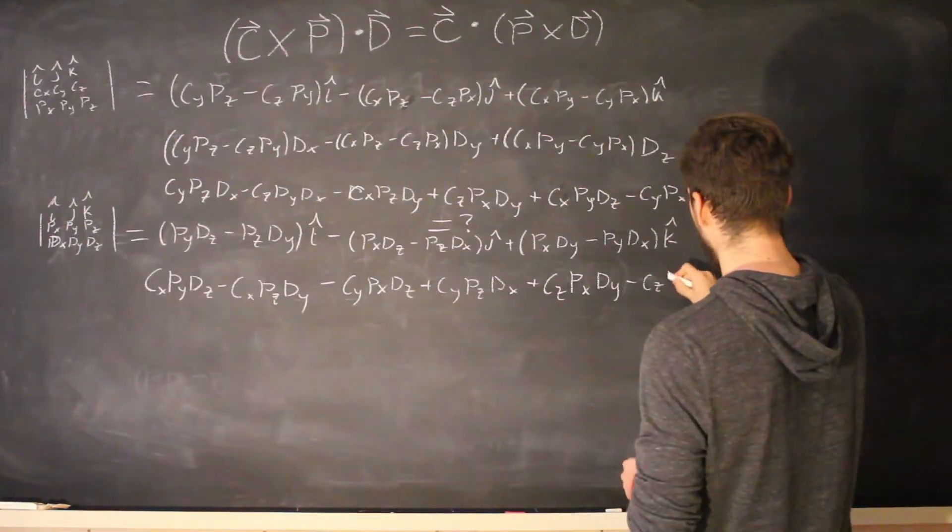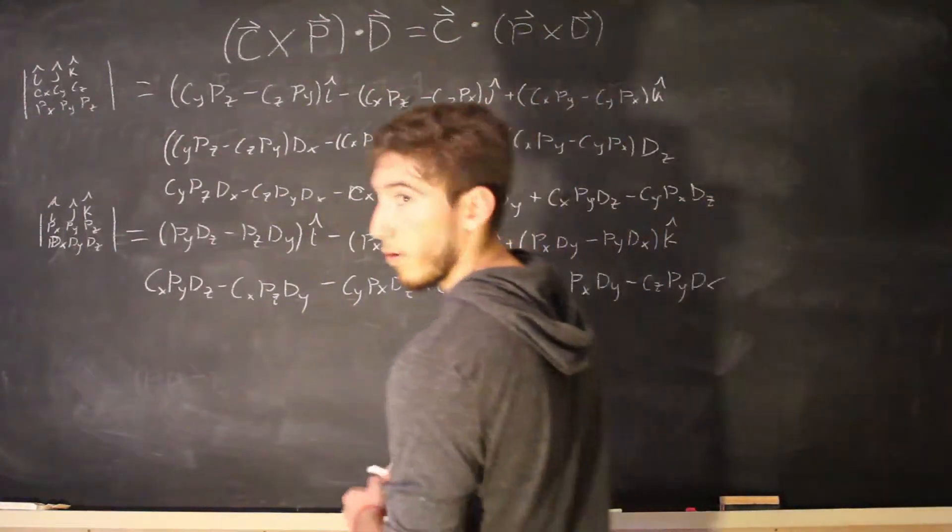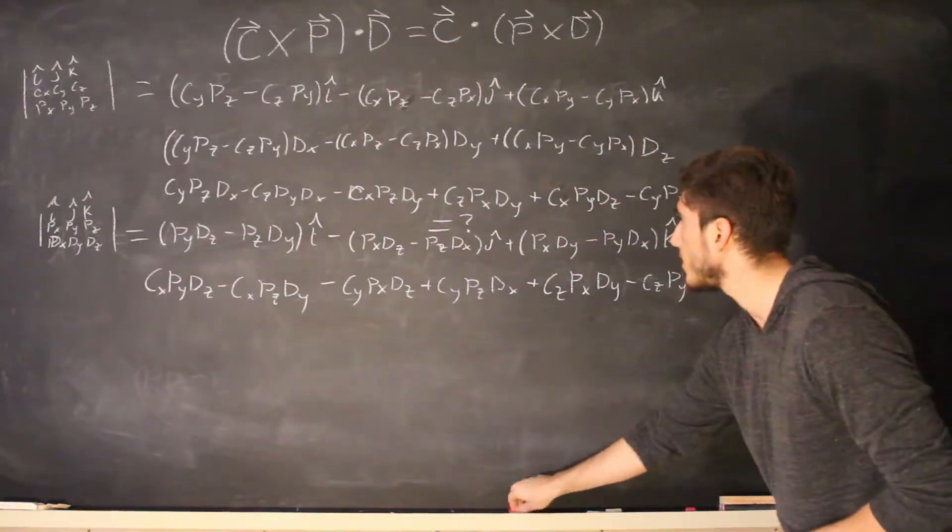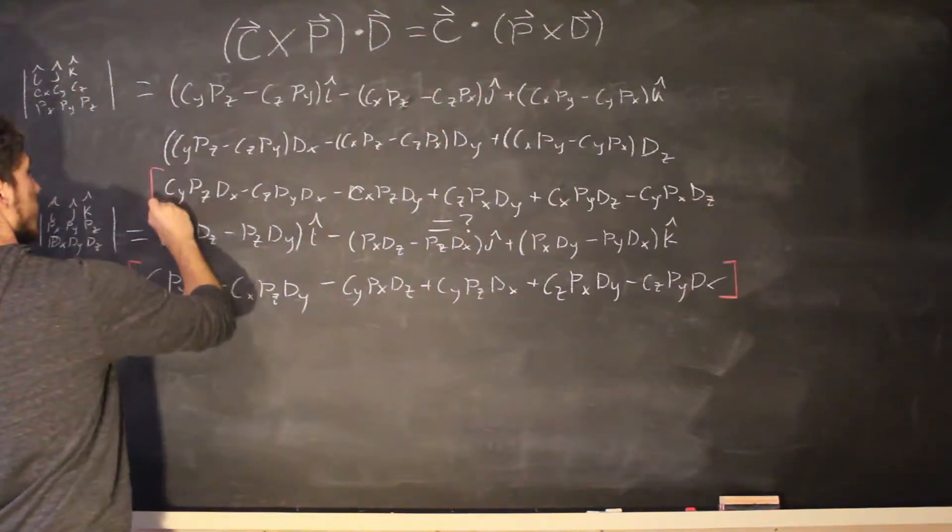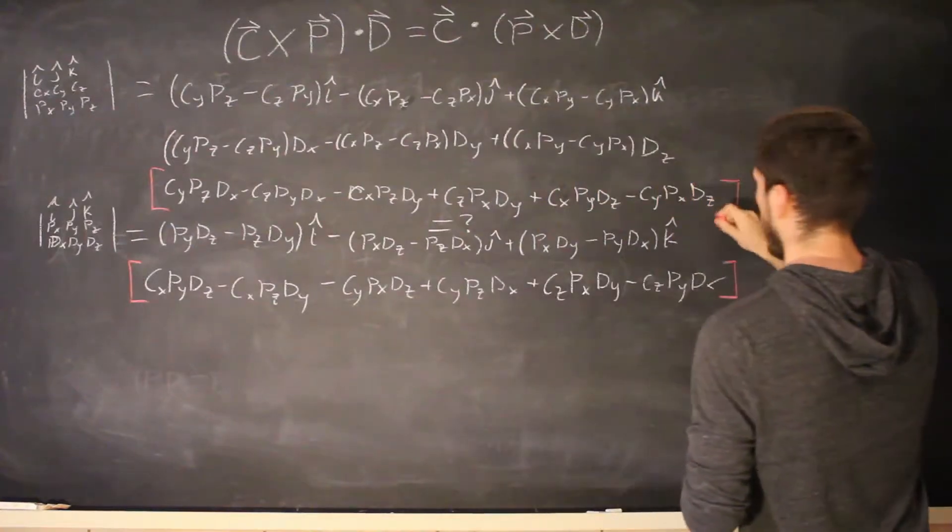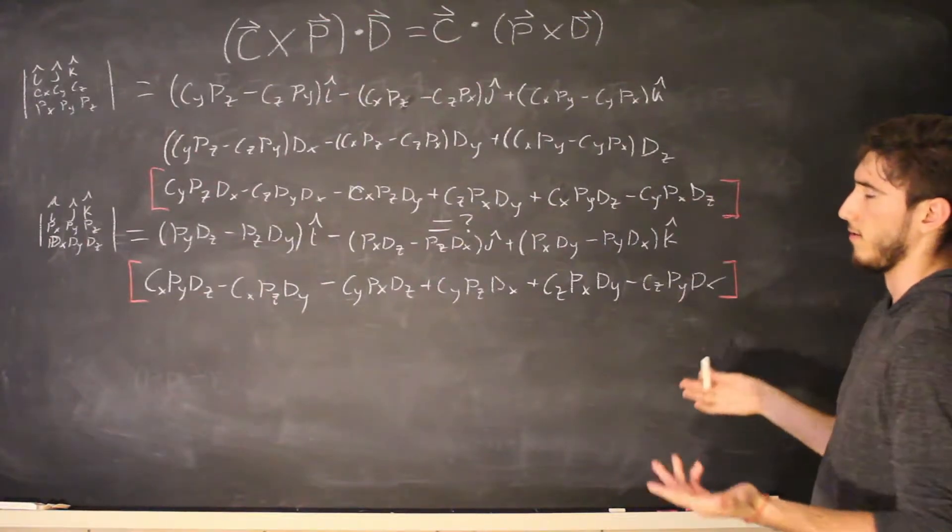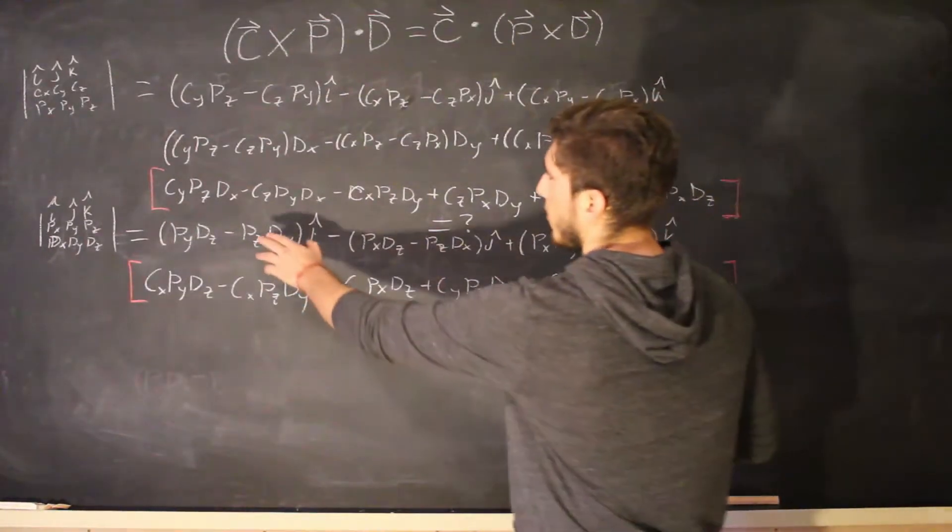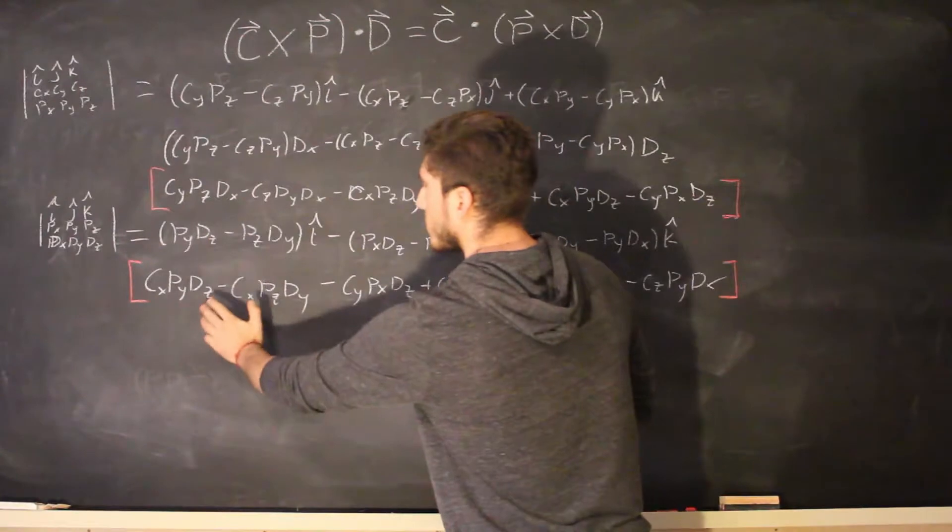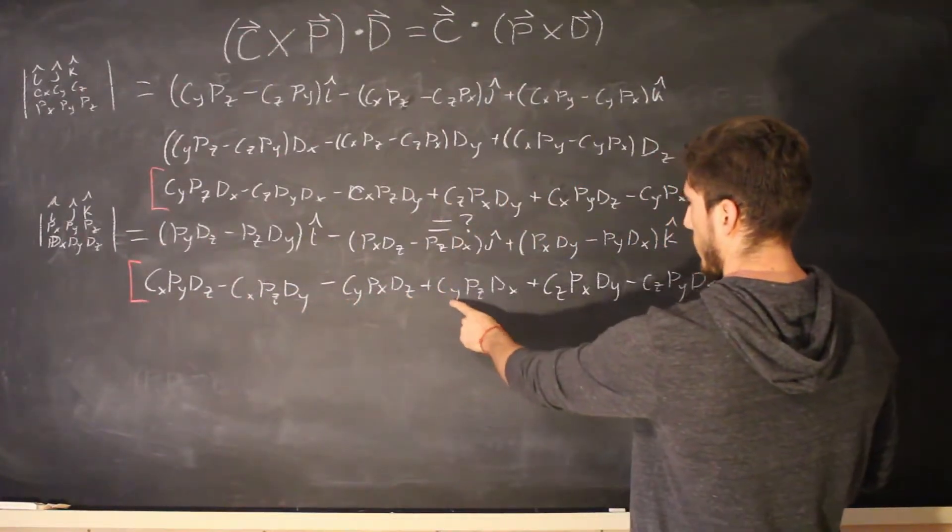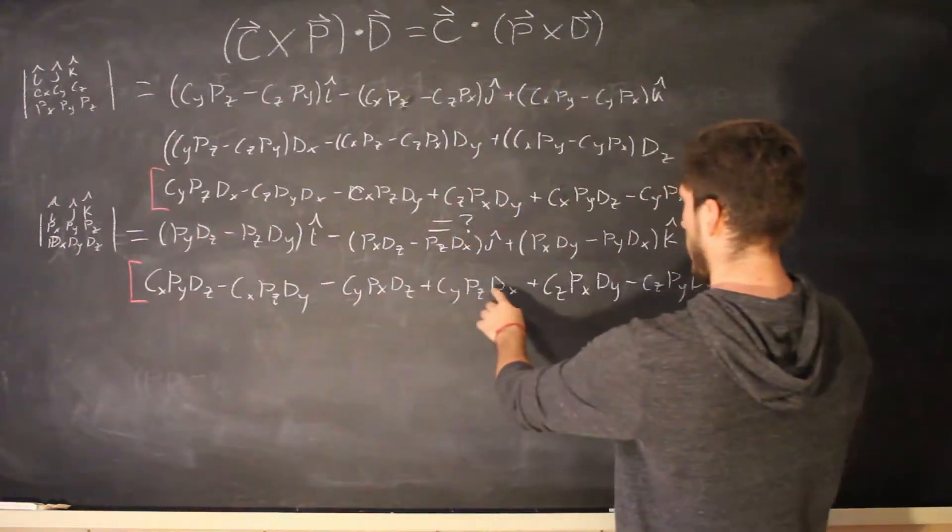minus CZ PY DX okay so what we want to be looking at are this whole situation here and this situation here and really all that's left to do is cancel them out since they're equal if we have something that's the same term they're just going to cancel out so our first term on our left side the resultant has a CY PZ DX and it's the same term CY PZ DX